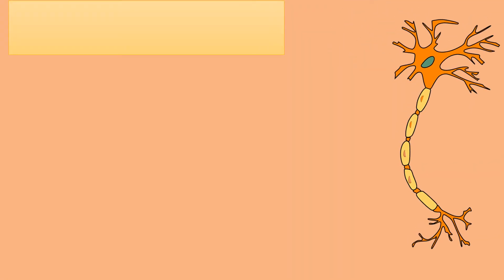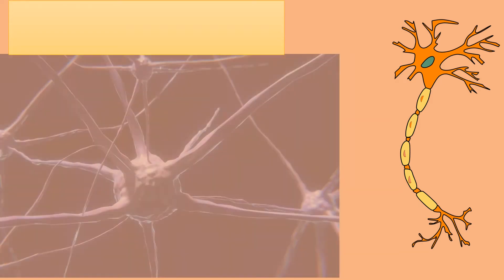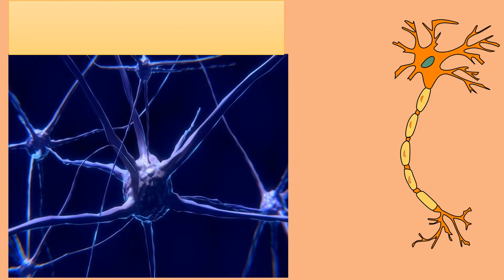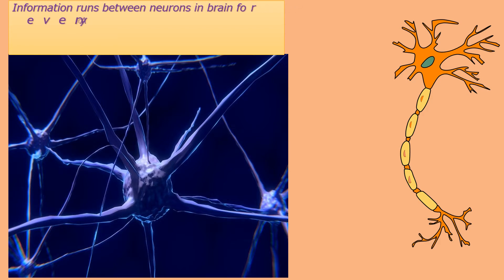The Neuron. The neuron, or the nerve cell, is the functional unit of the brain. In the brain, many neurons are connected to each other and they continuously transmit messages to all parts of the body. Information runs between neurons in the brain for every action or thought we have.